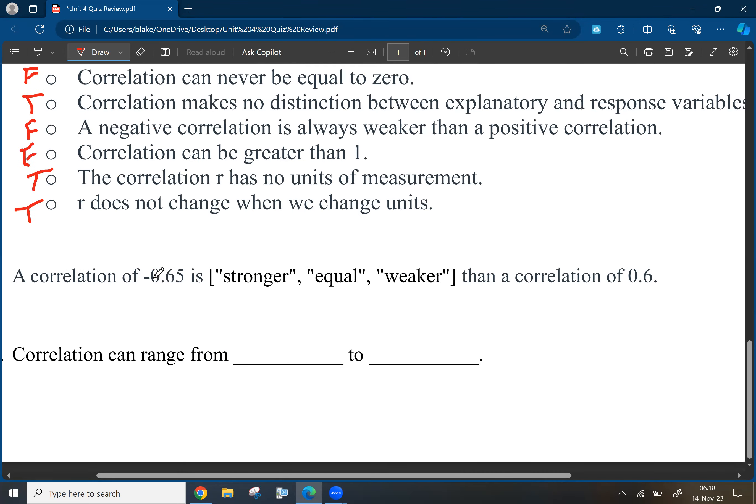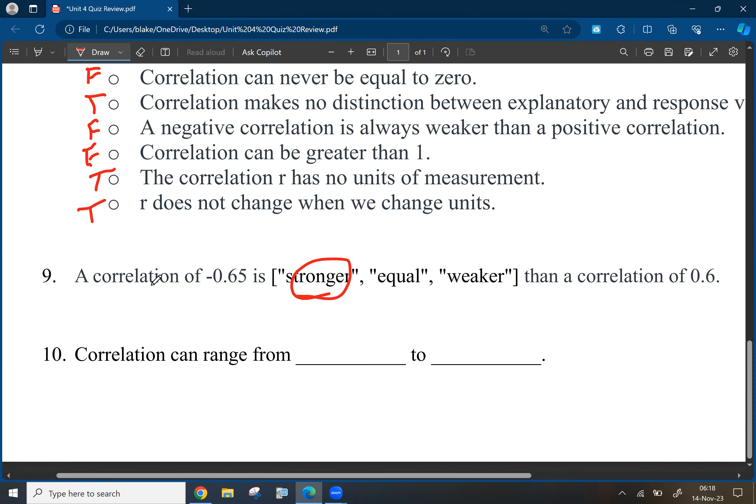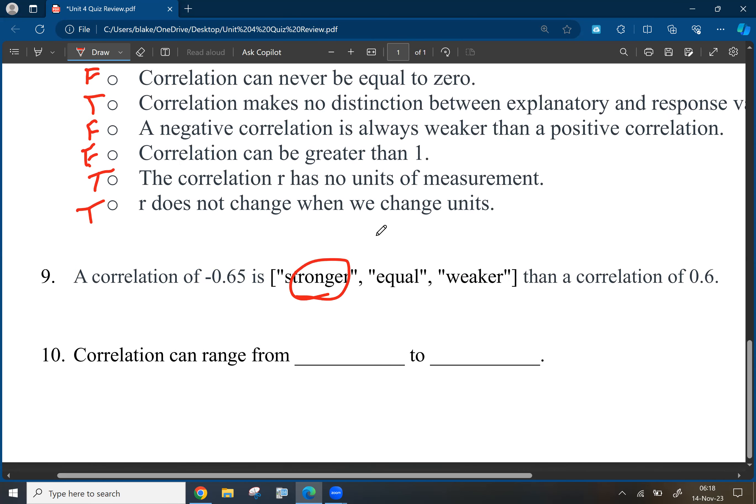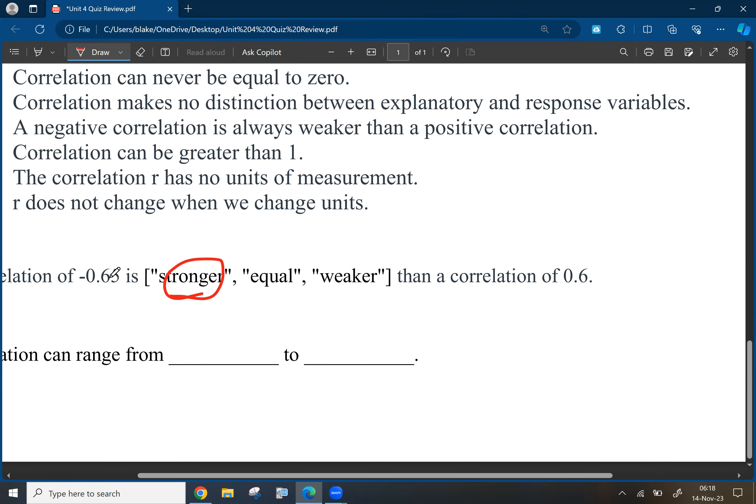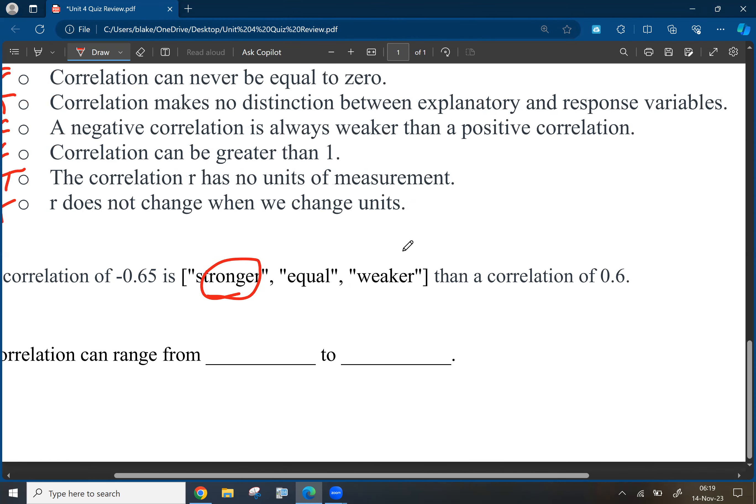All right. So, a correlation of negative 0.65 is stronger, equal, or weaker than a correlation of 0.6. Well, this is closer to negative one than that is to positive one. So, that means this is stronger. So, again, closer to negative one is perfect. Closer to positive one is perfect. But this one's closer to negative one, the perfect negative value. Then this one is to positive one, which is the perfect positive value. So, that's what makes that one stronger. Right? 6.5 essentially is higher than 0.6.